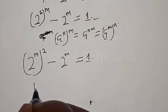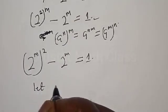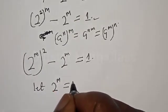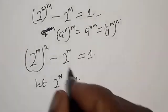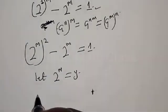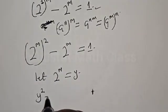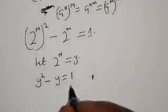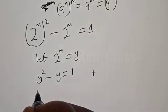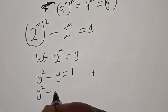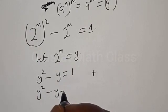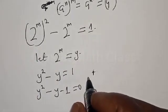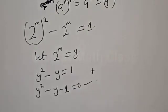Then we let 2 raised to power m equal to y. Therefore, we have y squared minus y equal to 1, which gives us y squared minus y minus 1 equal to 0. This is a quadratic equation.